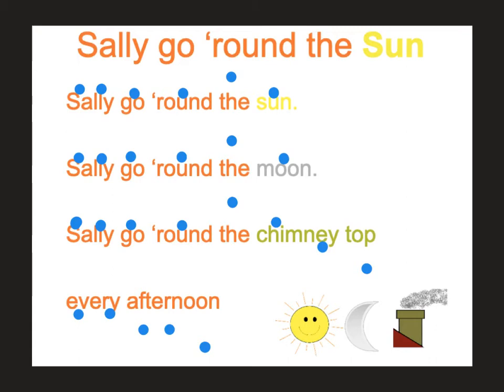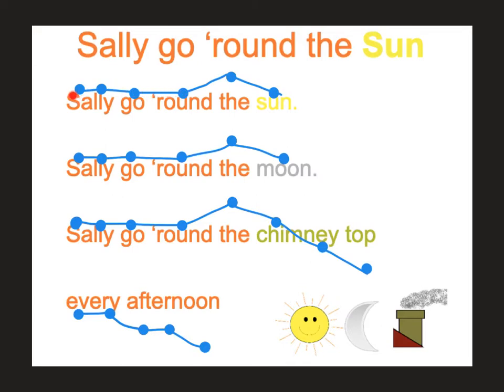If I connect these dots, then you would be able to see the high and low sounds of your voice. Notice that these lines go pretty straight — our voice stays the same — except for one little bump up in each of the first three lines.